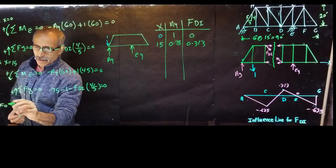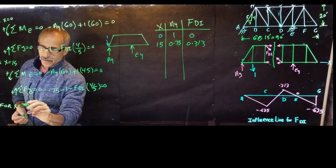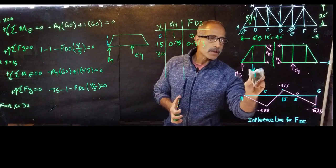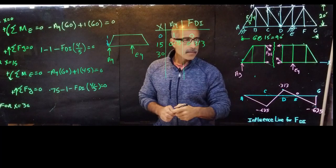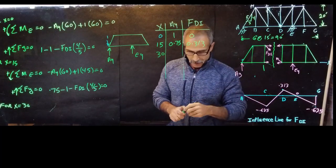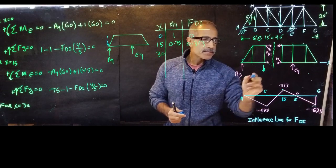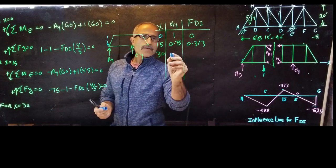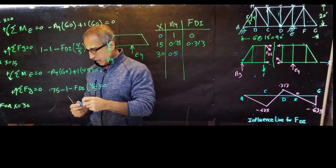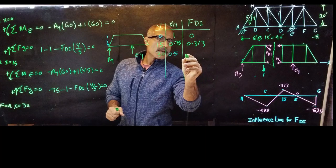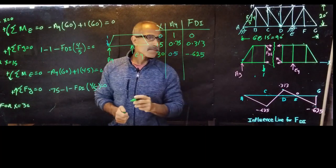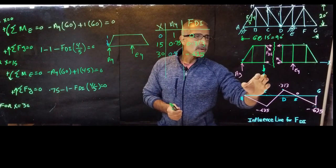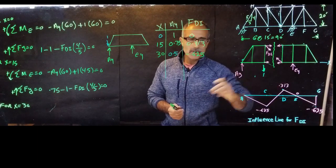For x equal 30, we move the load one more bay over. Running the same calculations through, Ay comes out to 0.5 and FDI comes out to negative 0.625. You can use a spreadsheet to calculate these efficiently. Notice the pattern — the interesting part is when the load moves past the cut to the other side.